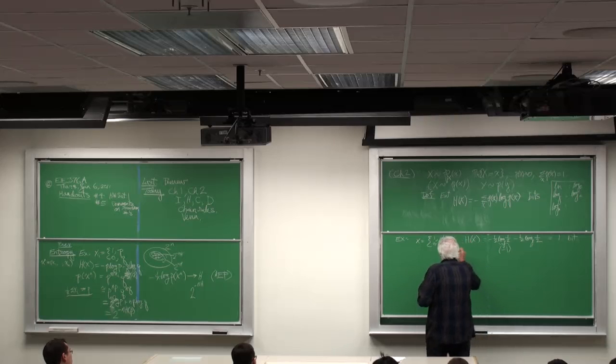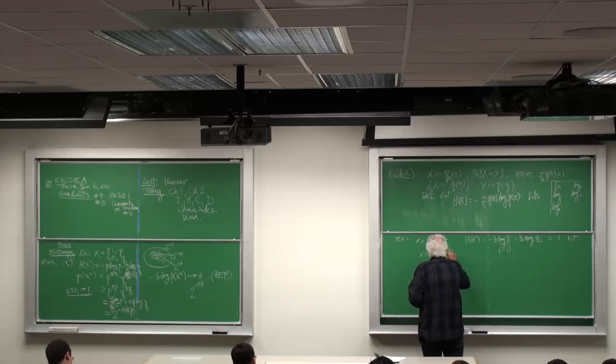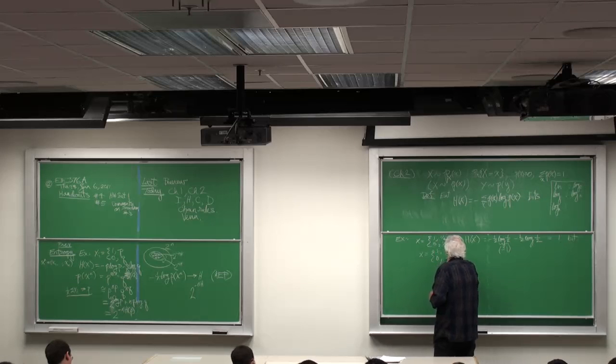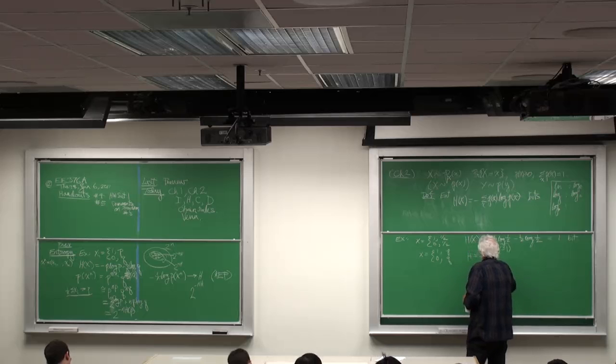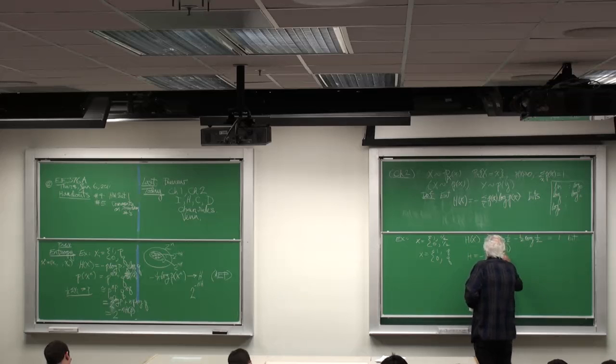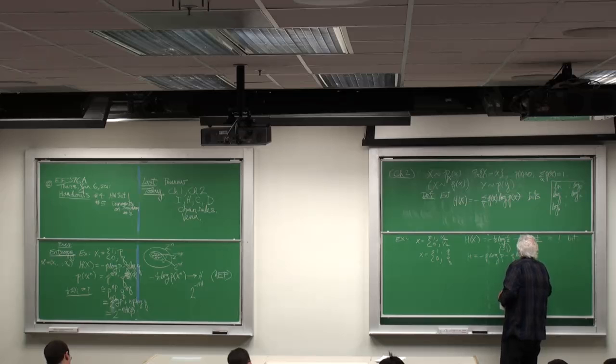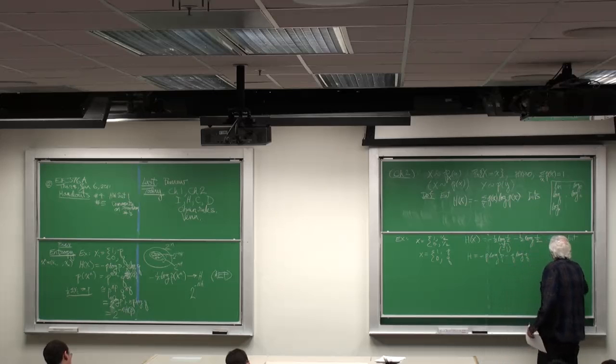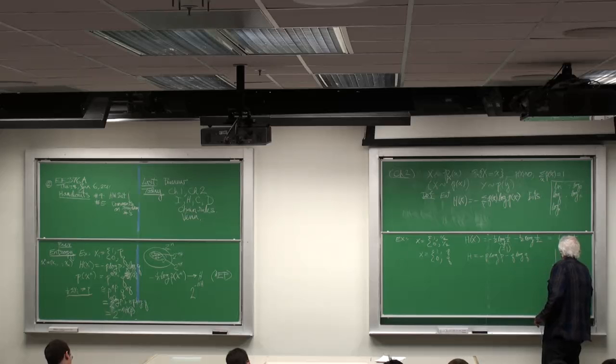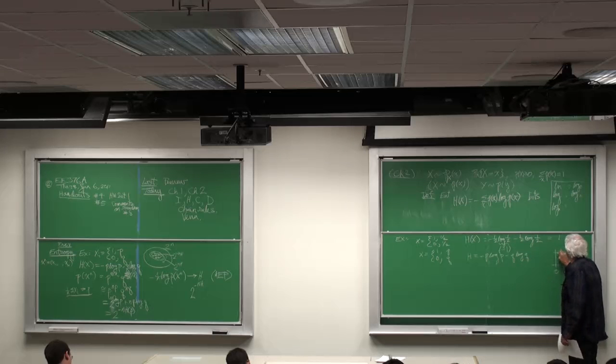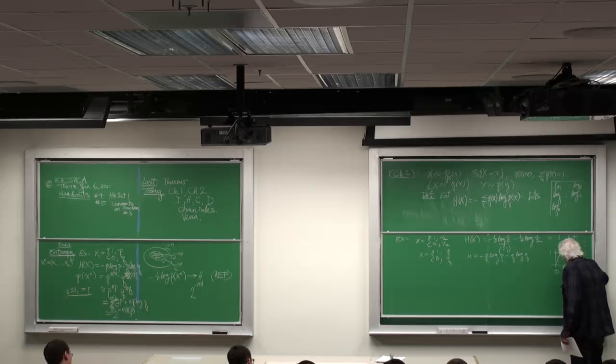Now, if indeed I changed it to 1 with probability P, 0 with probability Q, then H is minus Q log 2. And that curve looks like this: 0, 1, here's P, here's 1, and the entropy looks like that.